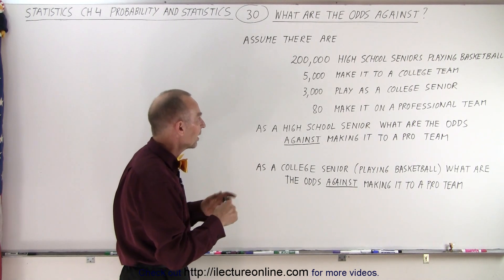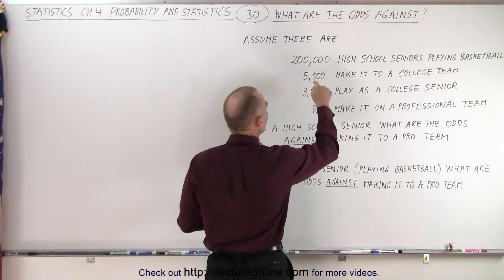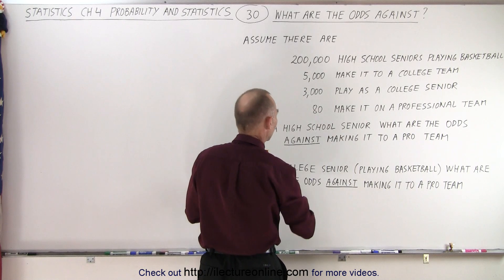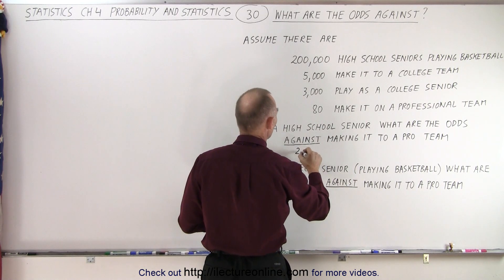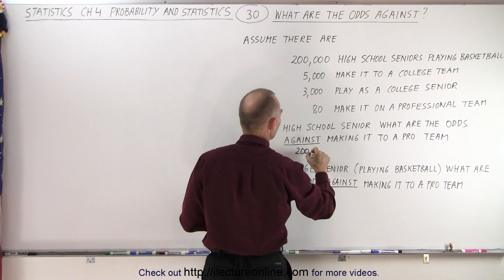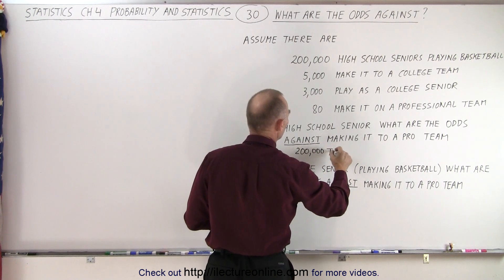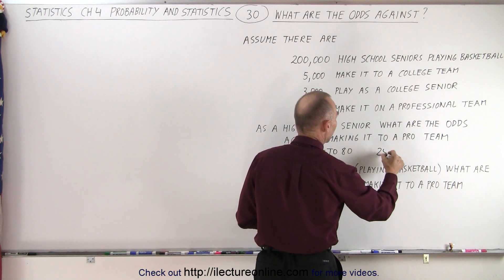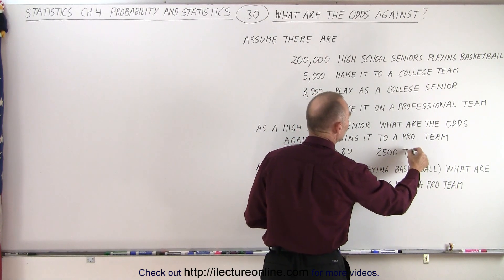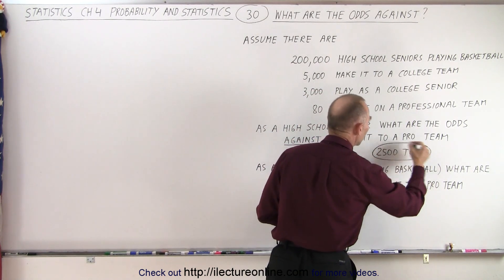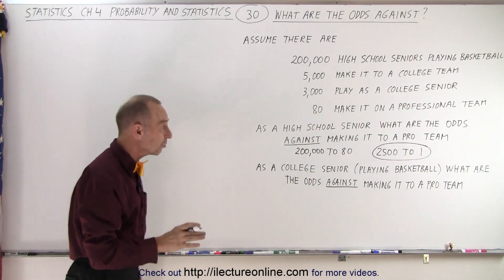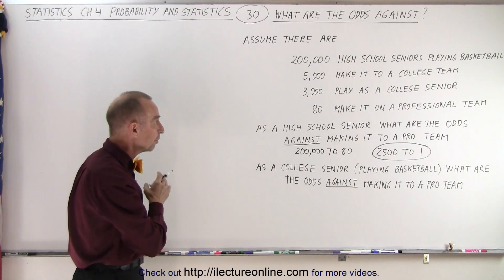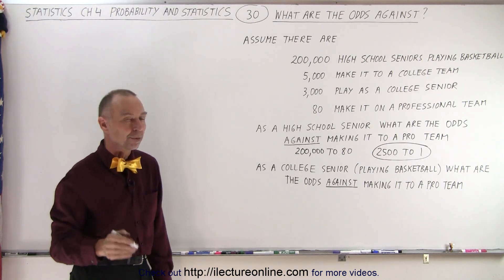What we do to figure that out is a comparison — a ratio of the number of high school seniors to the number of spots. So that would be 200,000 to 80, and if we divide both sides by 80, we get 2,500 to 1. That is the odds against: 2,500 to 1 that a high school senior playing basketball will actually make it to a professional team.